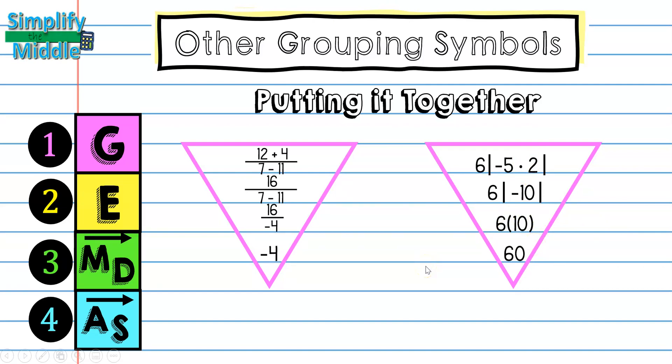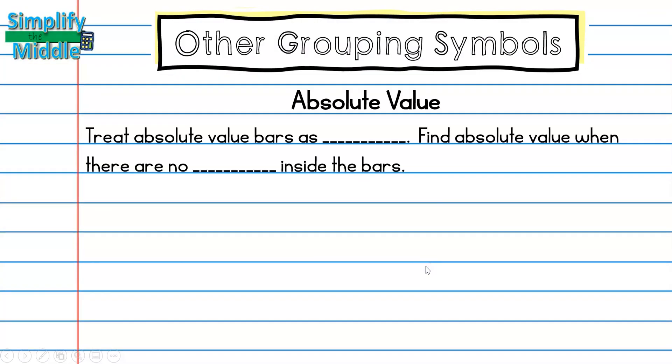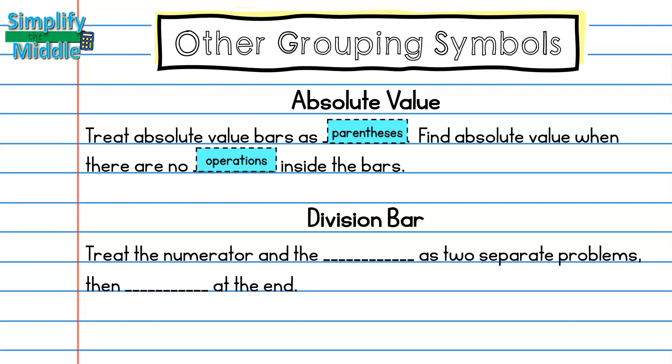Let's recap. We know absolute value - we are going to treat absolute value bars as parentheses. We'll find the absolute value when there are no operations inside the bars, so there's no more addition, subtraction, multiplication, or division to do. For division bar we will treat the numerator and the denominator as two separate problems, then you're going to divide at the end.